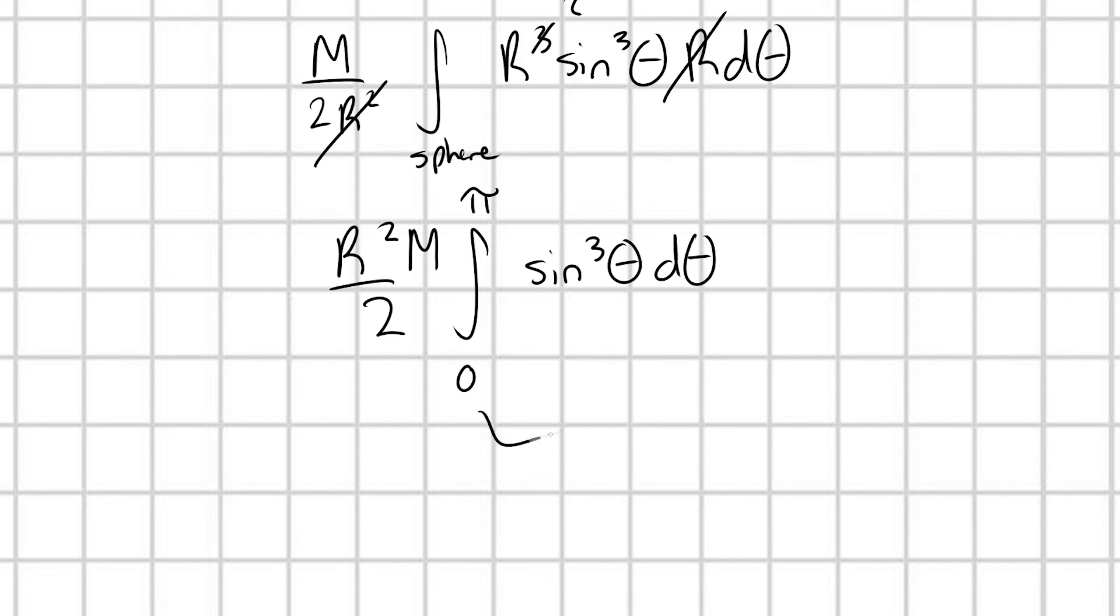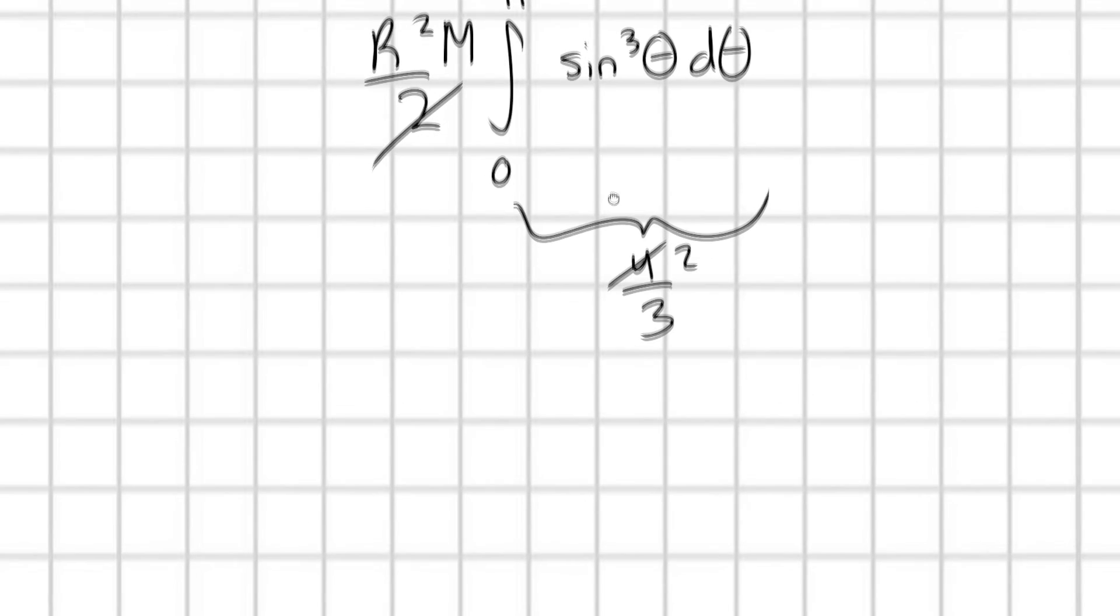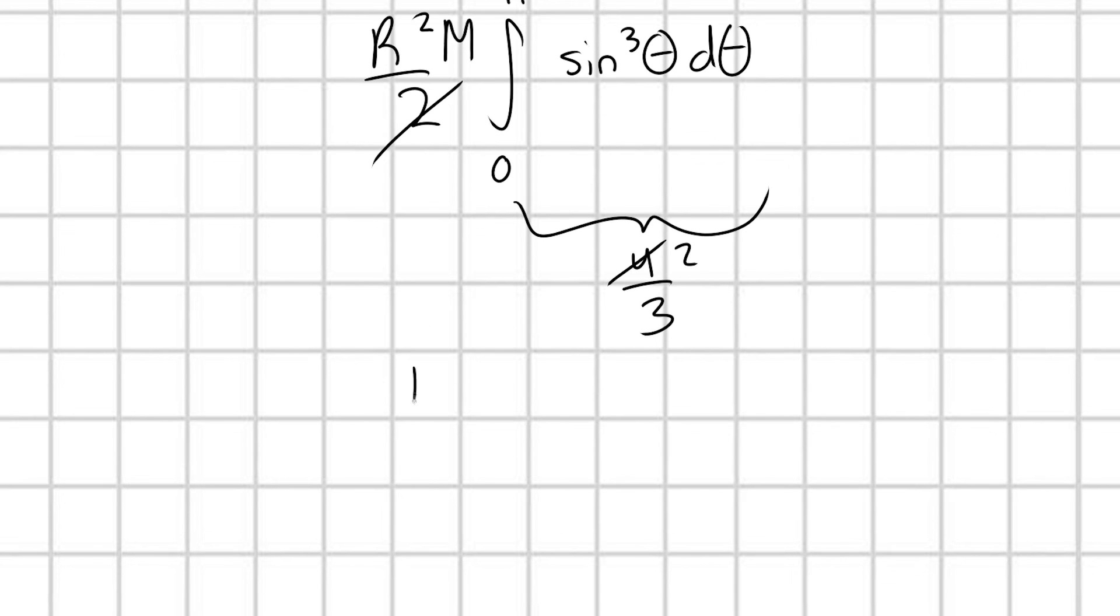Okay, and this definite integral here is very nice. It just gives us 4 thirds if we actually compute this out. We could either do it by hand, use some trig identities, or just plug it into a calculator. Whatever way, it's going to give us 4 thirds. And this 4 is going to cancel out with this 2. And we're going to be left with our final result. I of our sphere is equal to 2 thirds m r squared. Awesome. So the moment of inertia of a spherical shell is 2 thirds m r squared.